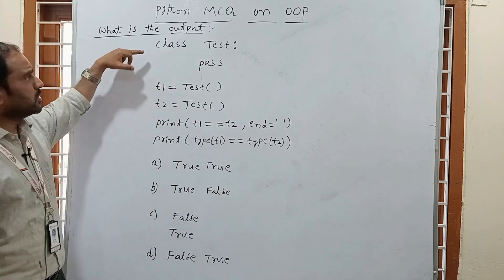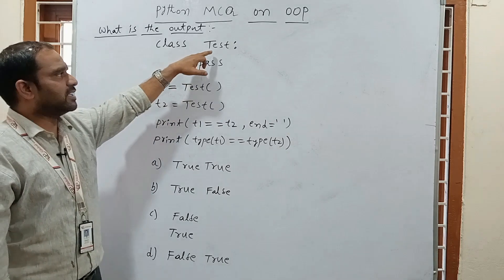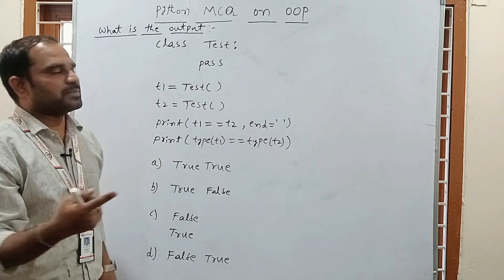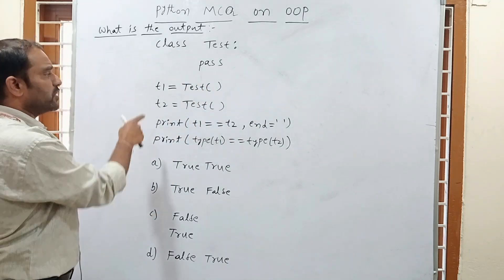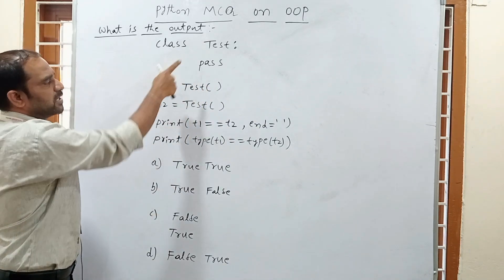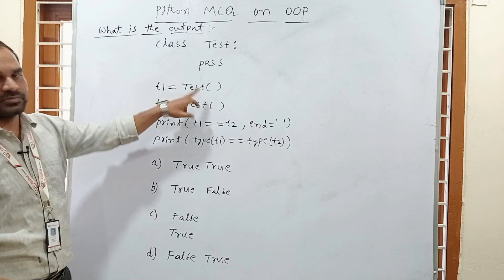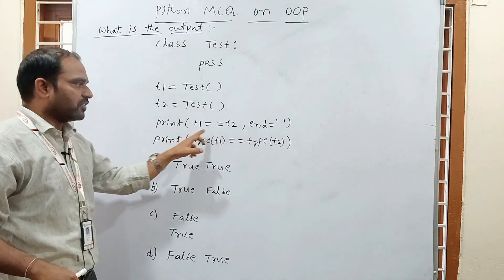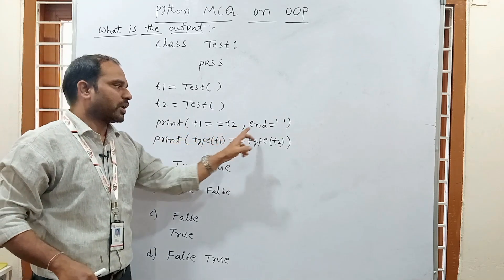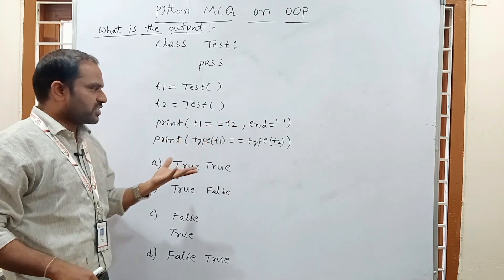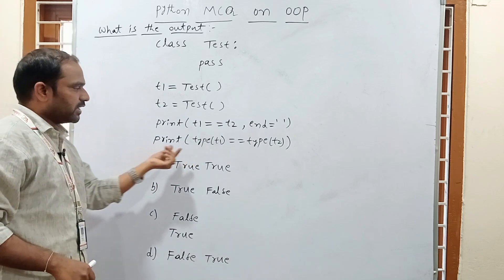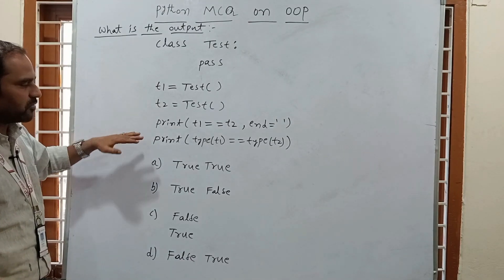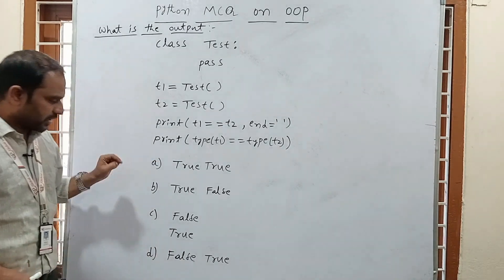See the program. We are creating a class with the name 'test' and nothing is inside it — so whenever a class is empty, you use the 'pass' keyword. We are creating two objects T1 and T2 under this class. We are printing T1 == T2 with 'end', and then printing type(T1) == type(T2). What will be the output?